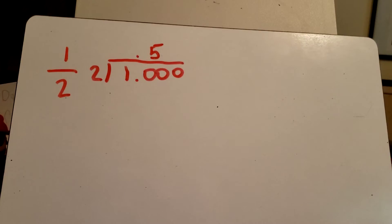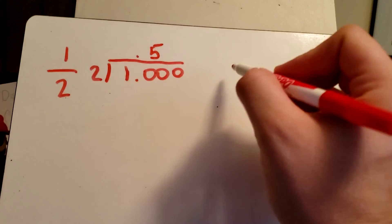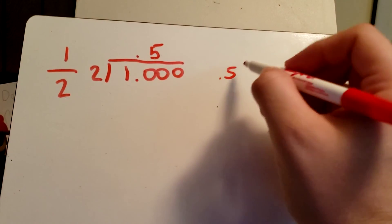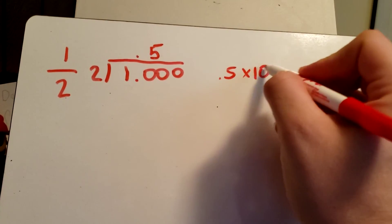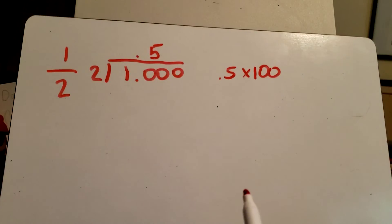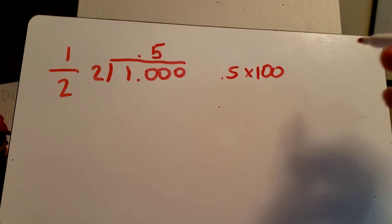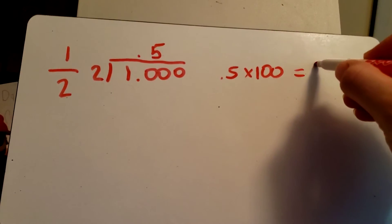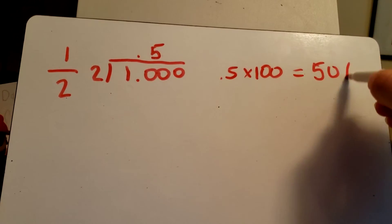Now a percentage is taking that decimal, 0.5, and multiplying it by 100. If you multiply a decimal by 100, you can turn it into a percentage. In this case, it would be 50 percent.